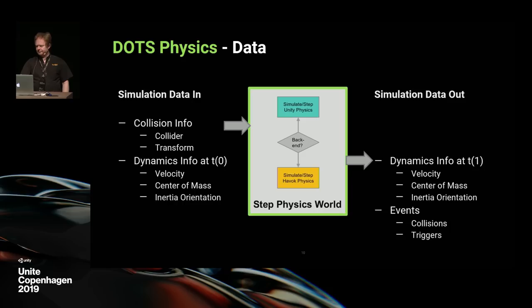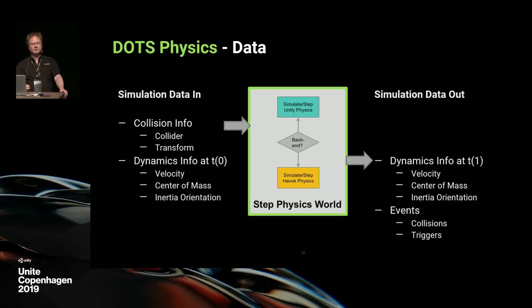The other set of information coming out of the simulation backend is a set of contacts and triggers. Contacts — I have collided with this bit of floor, and you might use that to spark off sound or particle effects like sparks. Triggers — you've got an overlapping object, you've entered a particular area, or there's a volume that represents an explosive force — that would be part of the trigger event information.